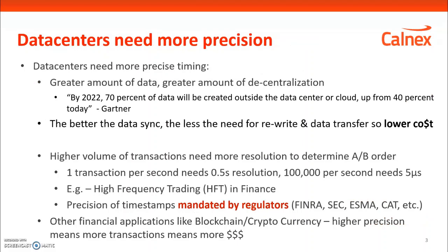One of the drivers for change today is that data centers need more precise timing because more and more data is being generated in different locations. Data centers are becoming more distributed globally and decentralized throughout regional locations, with data generated remotely and then centralized at a global location. More and more computing is moving out of the data center and into edge computing, and this data needs to be correlated.